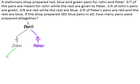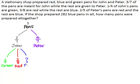Out of John's pens, one-quarter are green. Three-eighths of the pens are red and the rest are blue. At this point, we do not know the fraction of John's pens that are blue, so we just have a question mark where the fraction should be.